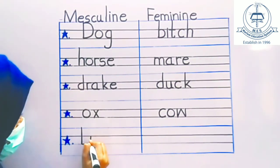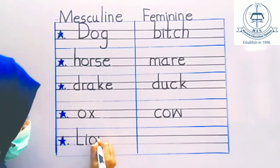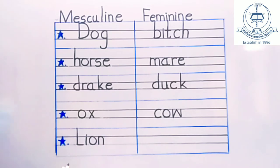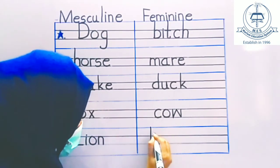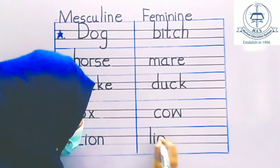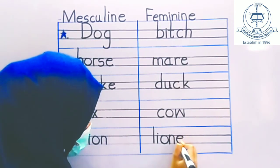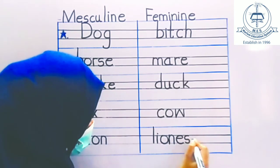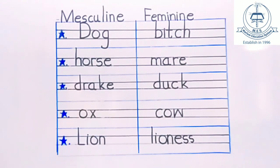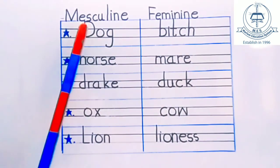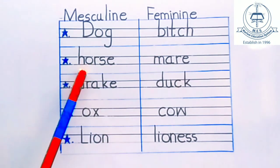C, O, W — cow. L, I, O, N — lion. L, I, O, N, E, double S — lioness.